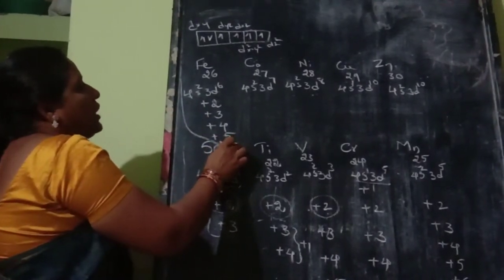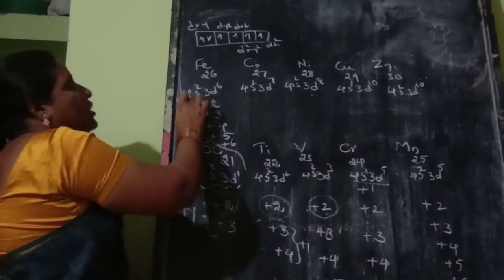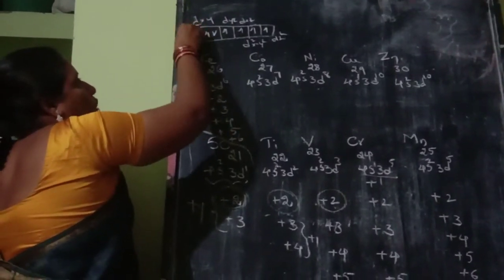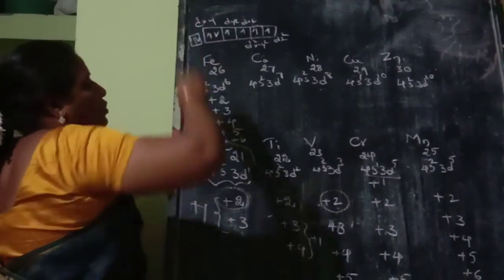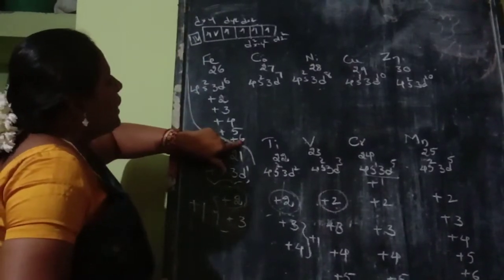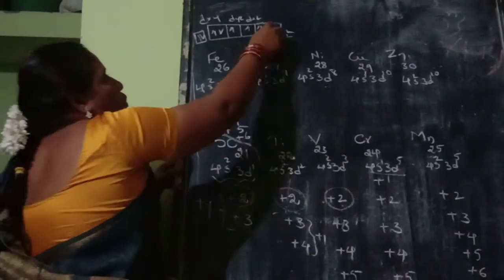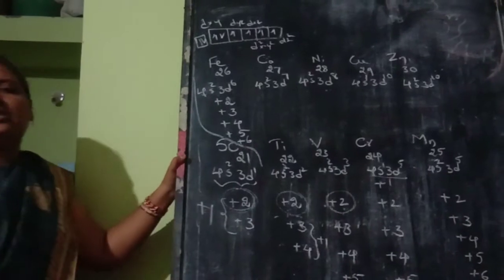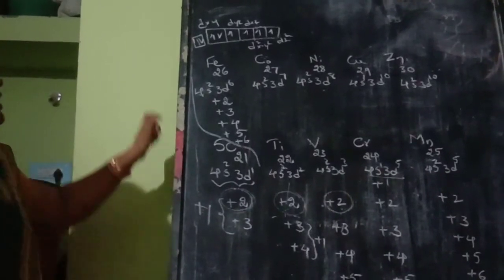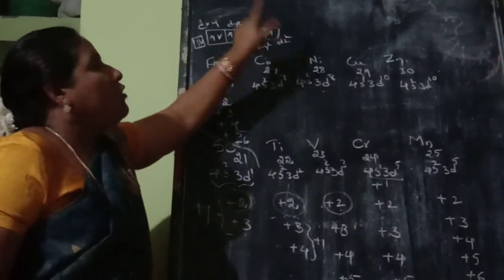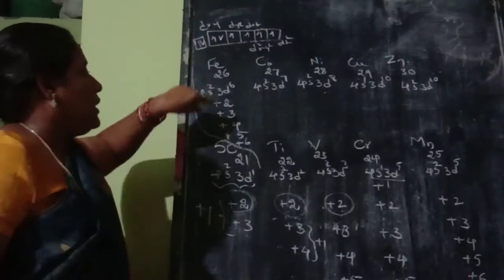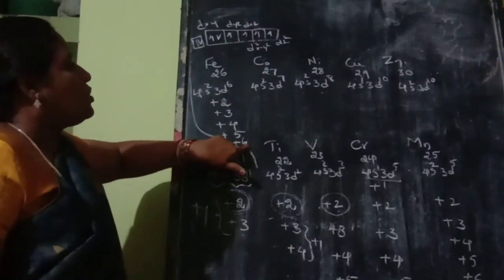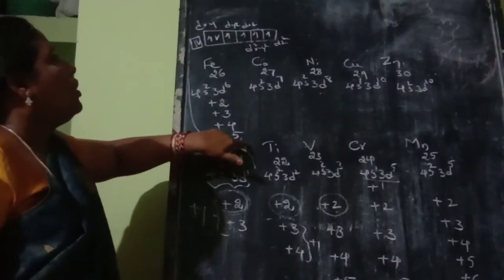Then from the remaining 4 D electrons, up to 4 more can be removed. So iron in its +6 oxidation state has 4 unpaired electrons remaining. Iron thus shows oxidation states up to +6.